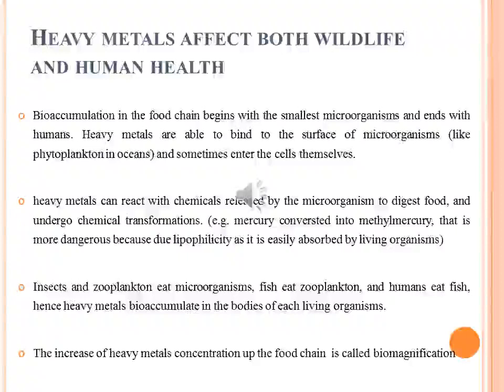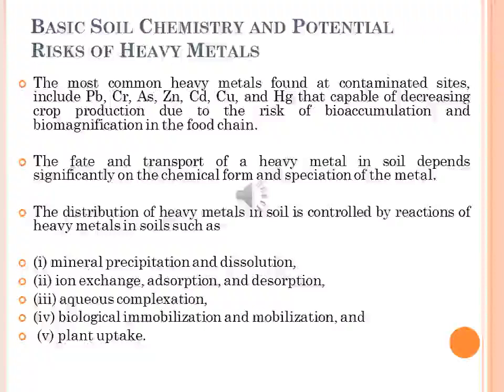The increase of heavy metal concentration up the food chain is called biomagnification. The most common heavy metals found at contaminated sites in order of abundance are lead, chromium, arsenic, zinc, cadmium, copper and mercury. These metals are important since they are capable of decreasing crop production due to risk of bioaccumulation and biomagnification in the food chain, and there are also risks of surface and groundwater contamination. Knowledge of the basic chemistry, environmental and associated health effects of these heavy metals is necessary in understanding their speciation, bioavailability and remedial options.